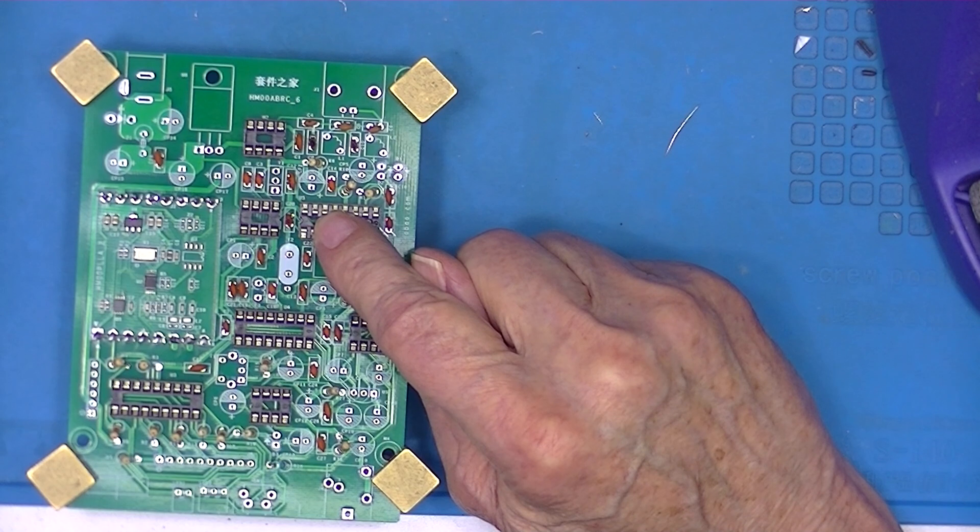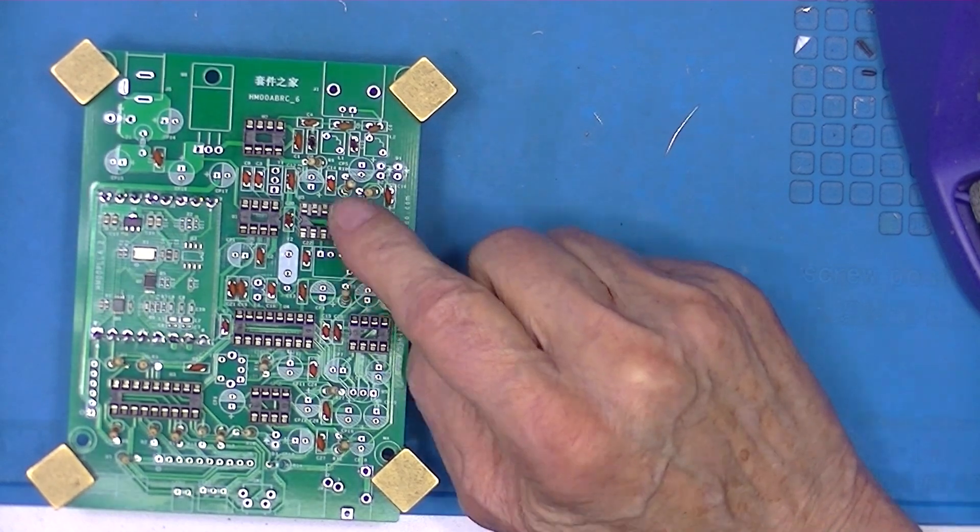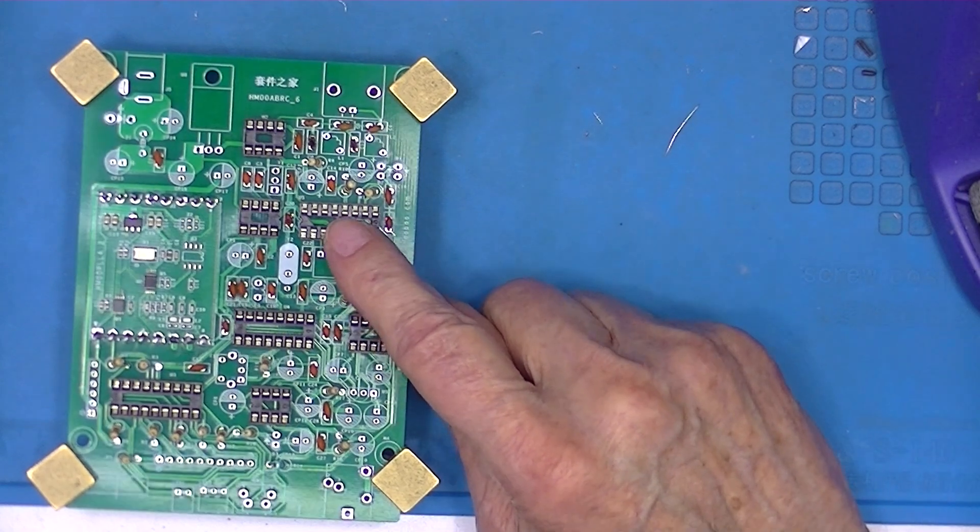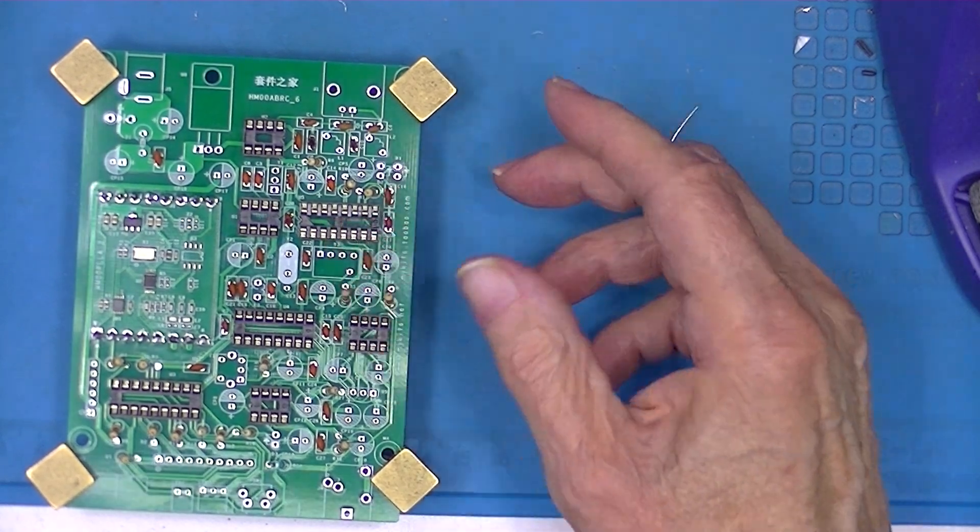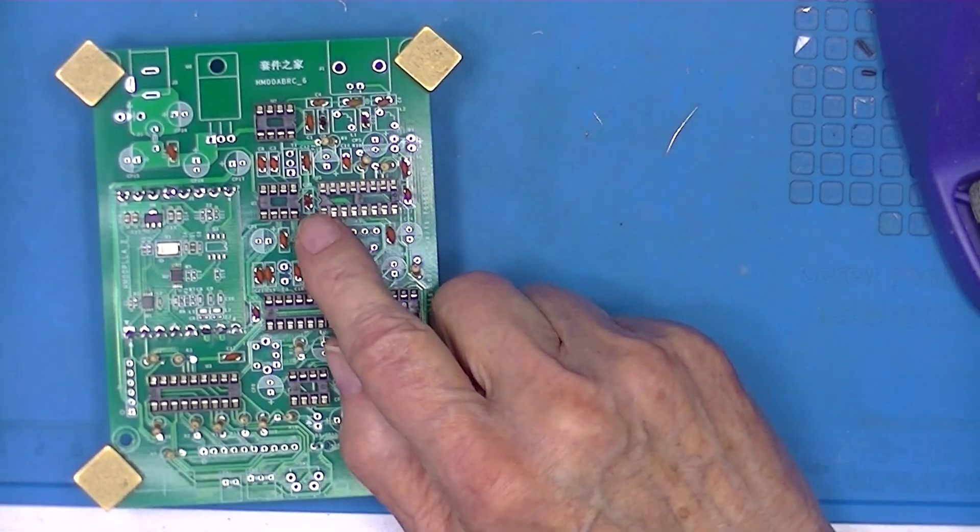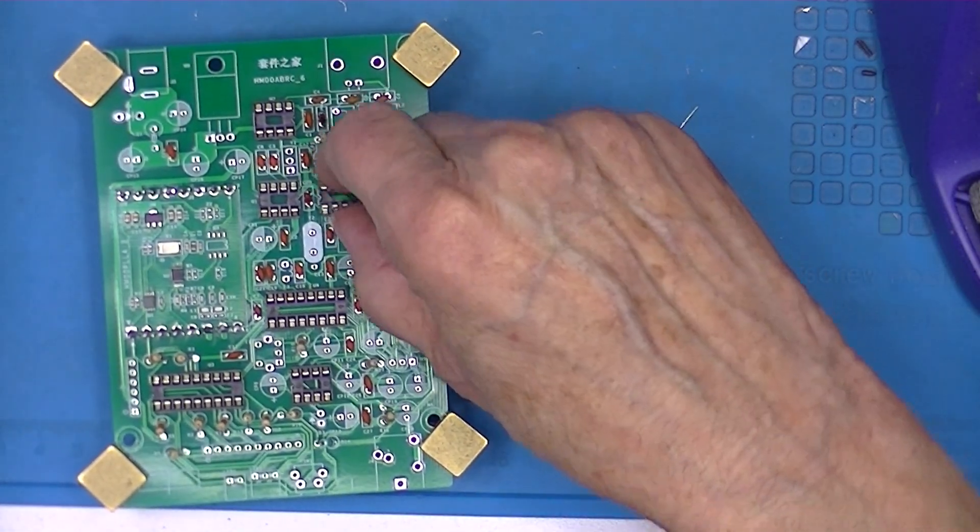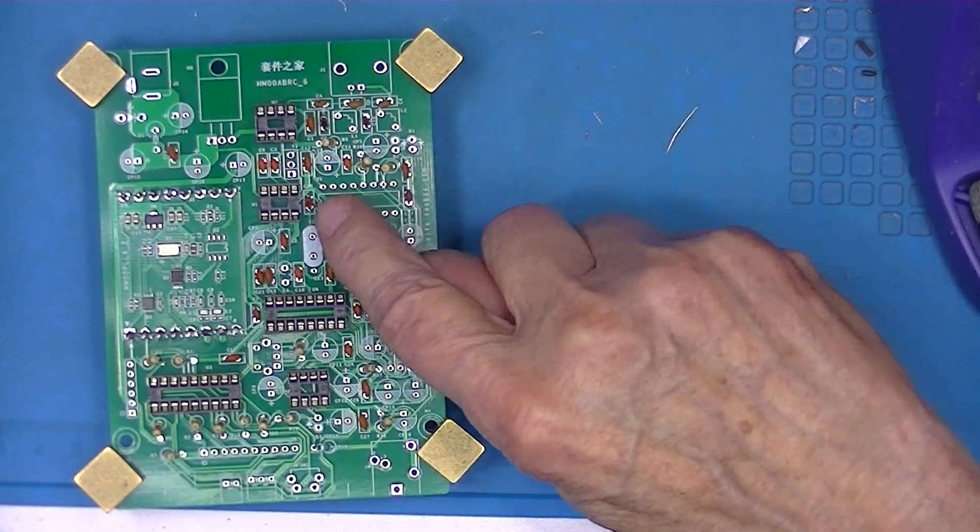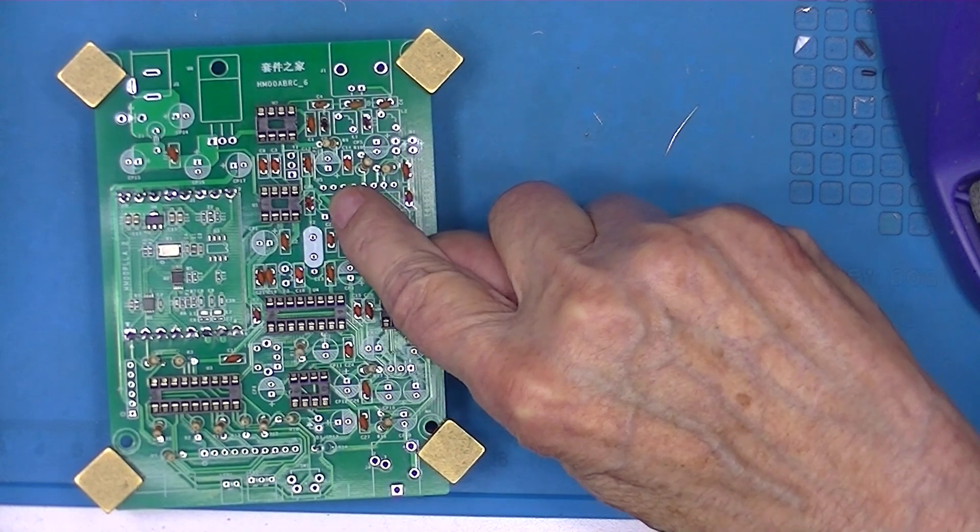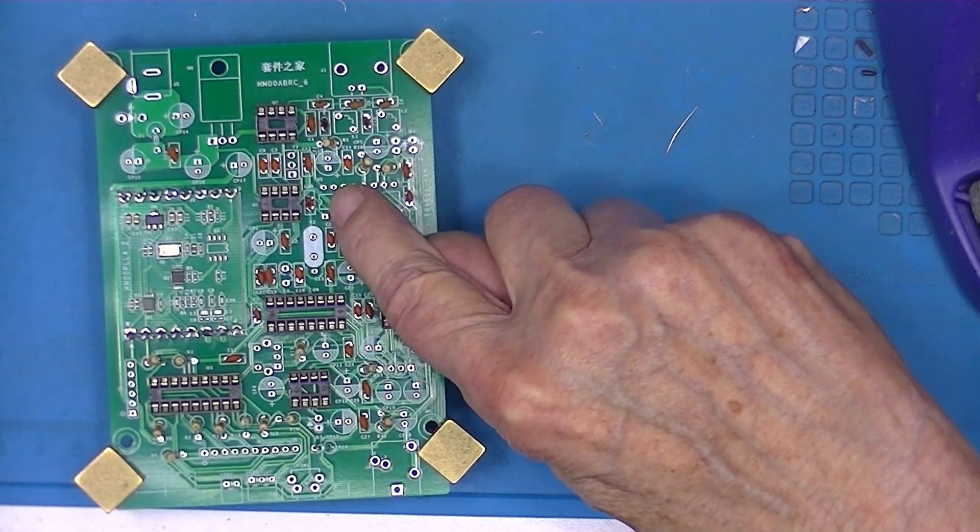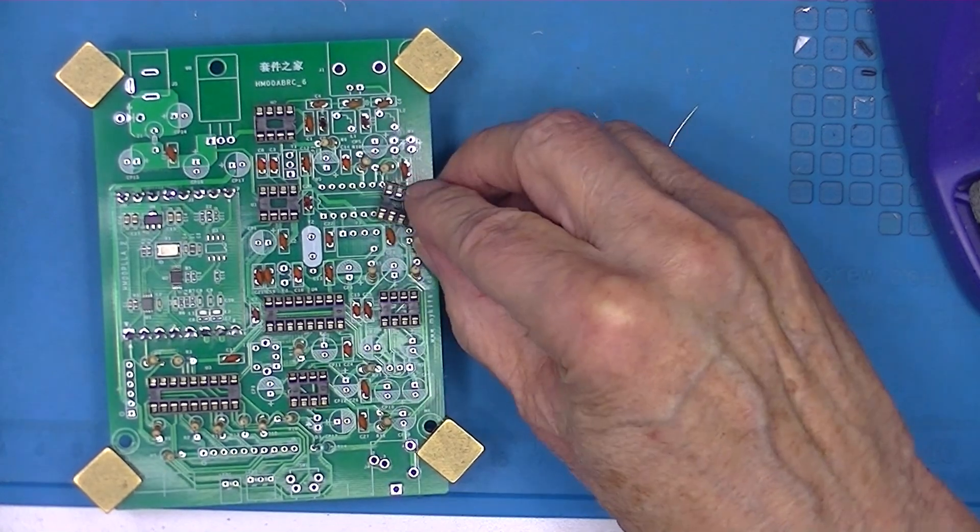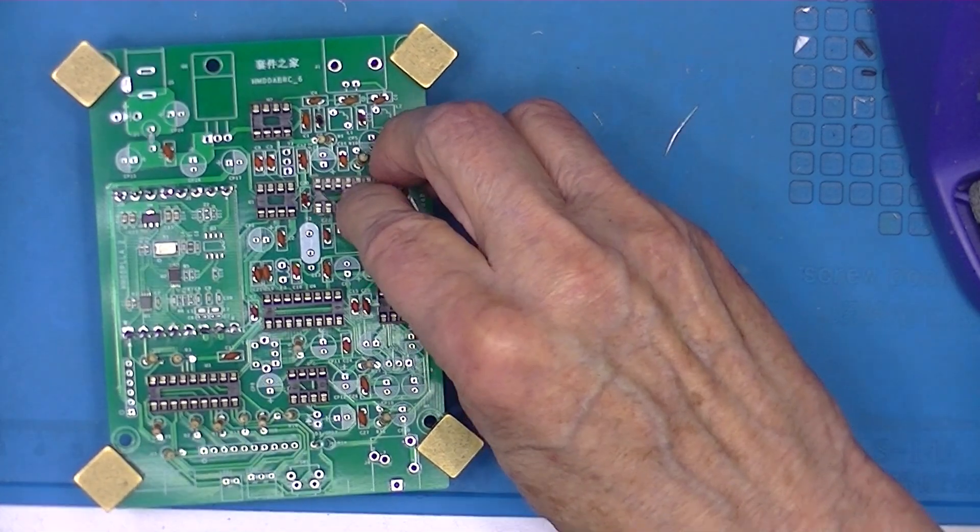Now if you have inadvertently installed the socket the wrong way, that doesn't mean you need to take it out. The socket itself is bi-directional. It doesn't matter, but you must make sure that you end up with the marked end of the IC facing the marked end of the silk screen. This is a more common kit error than you would think.